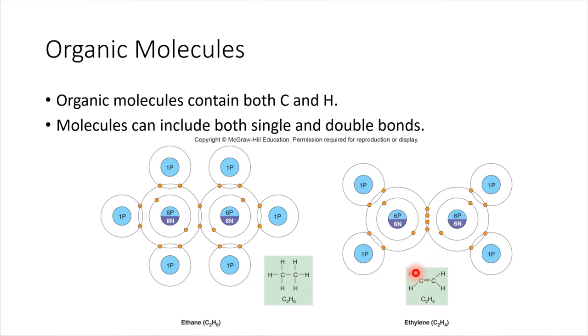If you have a single line connecting two atoms, that's a single bond. If you have a double set of lines, like this right here in the middle of this ethylene molecule, that is a double bond.